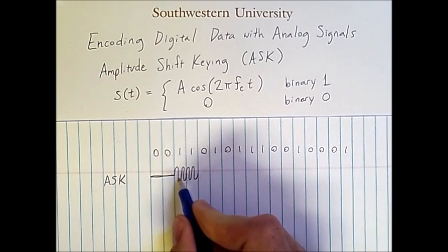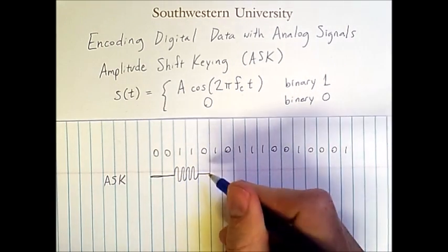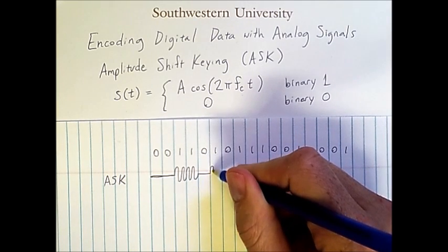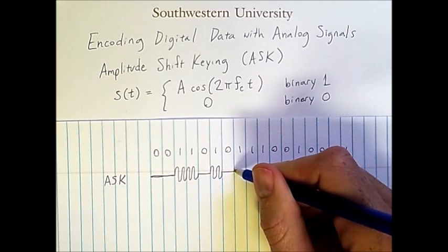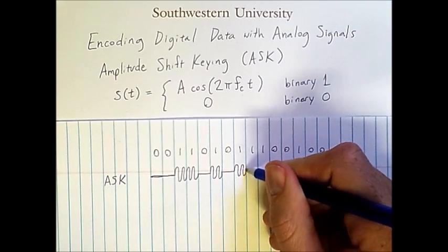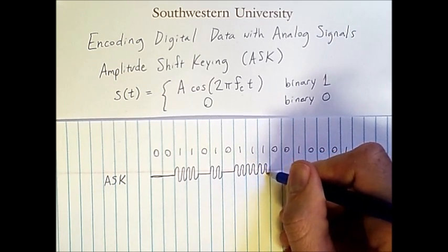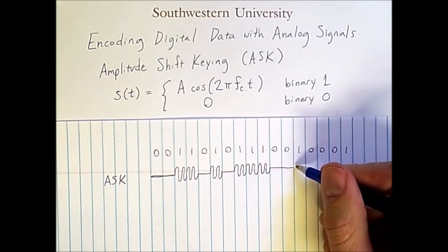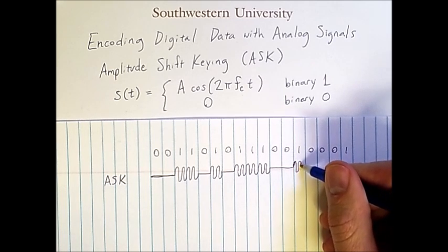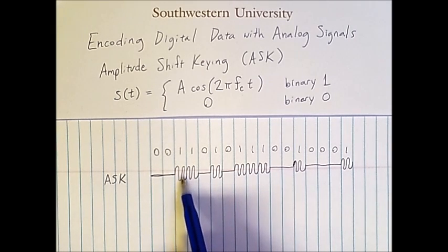It ultimately doesn't matter too much for how ASK works — it's just a technical detail. Here, when we're encoding 1s, we have a wave that's fluctuating, and when we go back to 0, we have a flat line again. Then for the 1 we have a wave again, then flat for 0, then waving for the 1, and so on. Visually, there is a very clear distinction between the 0s and the 1s: for the 0s we have a flat line, and for the 1s we have a repeating wave.